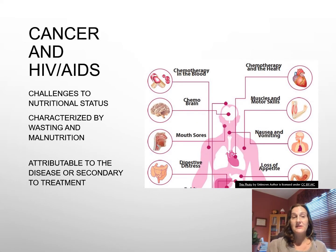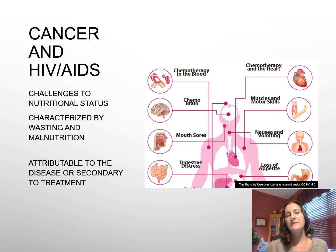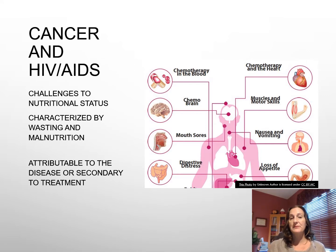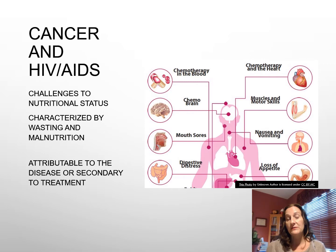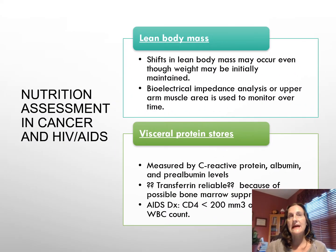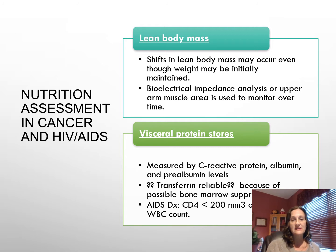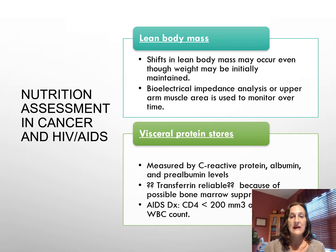As we begin to talk about cancer in general and HIV AIDS, these are probably the most challenging when it comes to nutrition therapy. The reason is because they are characterized by muscle wasting and malnutrition, a compromised immune system, attributable to the disease itself or secondary to the treatment of the disease. In both cancer and HIV AIDS patients, we see a shift in lean body mass, although their weight is initially maintained. So you can't look at just the weight of the patient; we have to measure lean body mass over time.